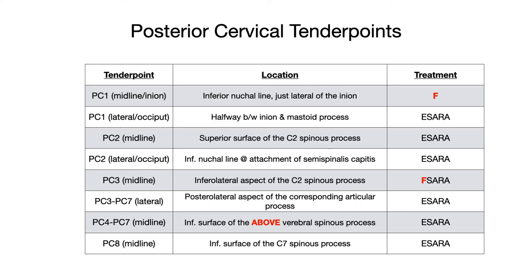PC8 midline is located on the inferior surface of the C7 spinous process, and the treatment is E-CERA. Looking at the chart, all of the posterior cervical tender points, with the exception of PC1 and PC3, are E-CERA — extension, side bend away, rotate away — because this shortens most of the posterior musculature associated with these tender points. PC1 and PC3 are mavericks, so they go into an opposite position where you lengthen the muscle: flexion for PC1, and flexion plus SERA for PC3.